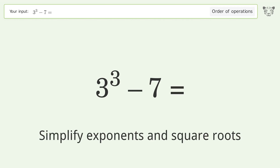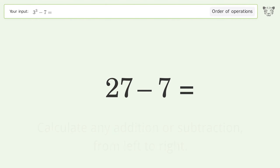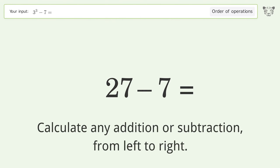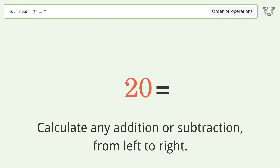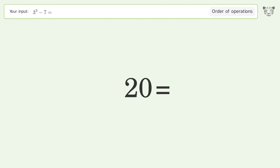First, simplify exponents and square roots: 3 to the power of 3 equals 27. Then, calculate any addition or subtraction from left to right: 27 minus 7 equals 20. And so the final result is 20.